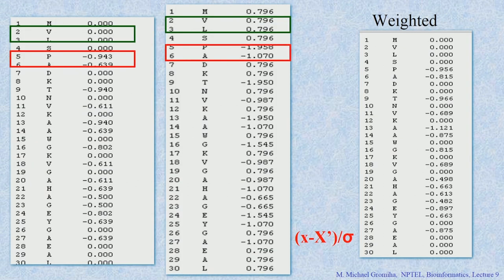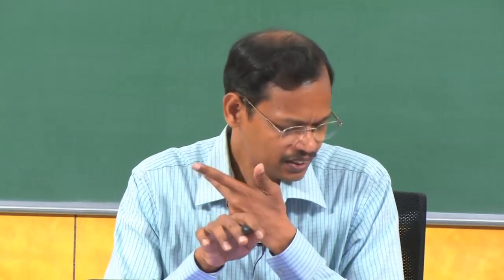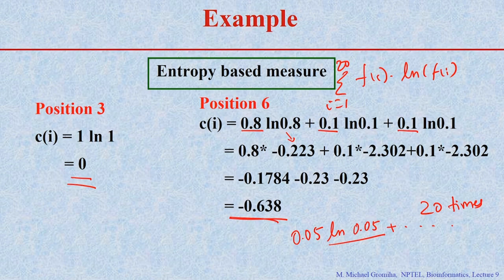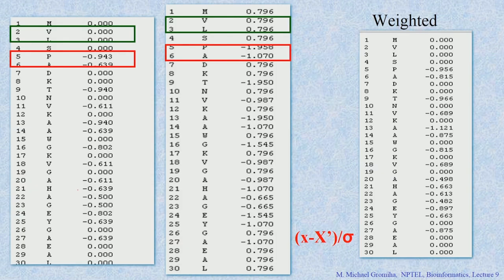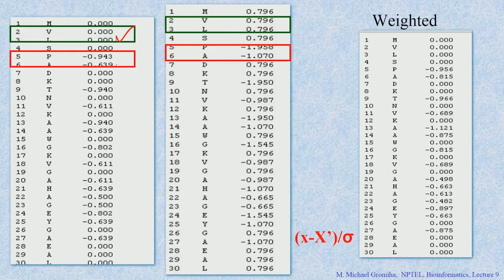Going through the positional conservation output, we can verify the positions we discussed. For position 3, which is occupied entirely by leucine, we get a value equal to 0 — this matches our calculation. Then checking position number 6 with alanine: we calculated minus 0.638, and the program gives minus 0.639. Then checking position number 9: the value is minus 0.940, because position 9 is more variable than position 6.